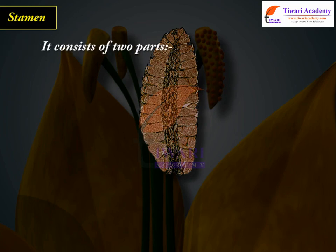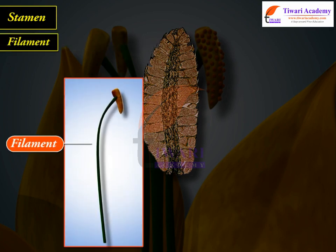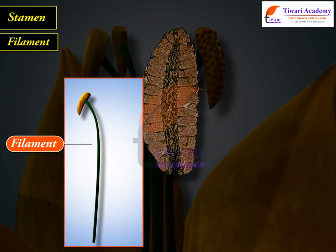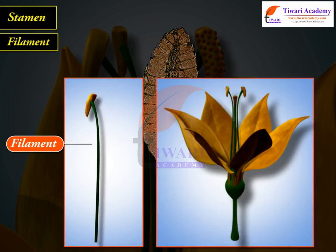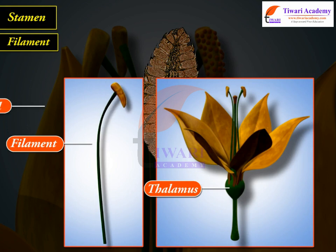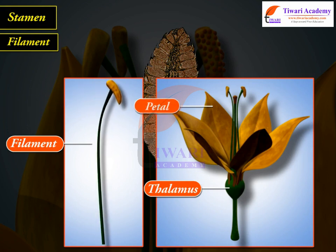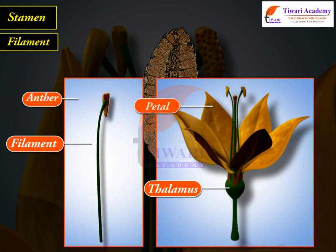It consists of two parts: filament and anther. Filament is a long and slender stalk. It is attached proximally to the thalamus or petal, and distally it bears an anther.